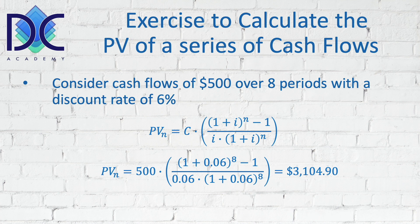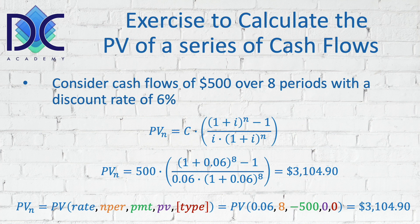You see there is a small difference compared to the previous $3,140.90 — that's due to rounding. We can also calculate this using the Excel PV formula: PV(0.06, 8, −500, 0, 0). The rate is 0.06, the number of periods is 8, the payment is −500 (negative because it is an investment), the initial present value is zero, and payments are at the end of the period. The result is exactly $3,104.90.